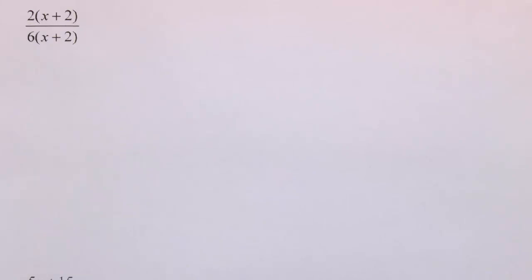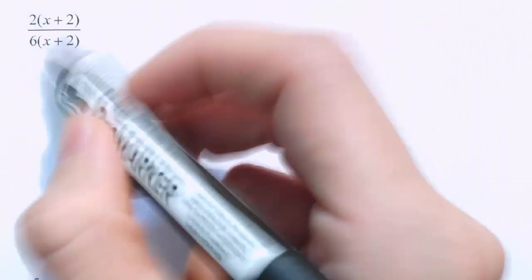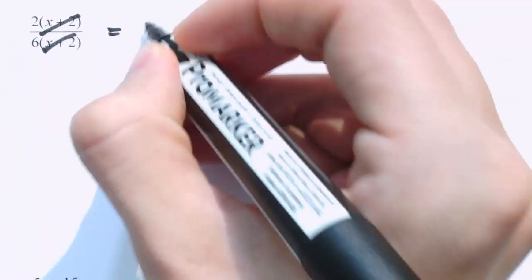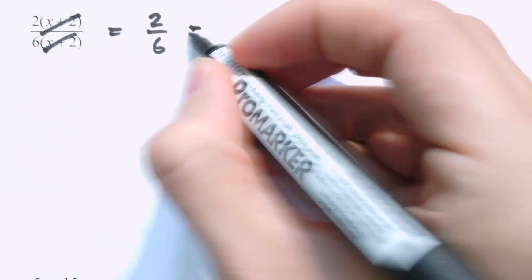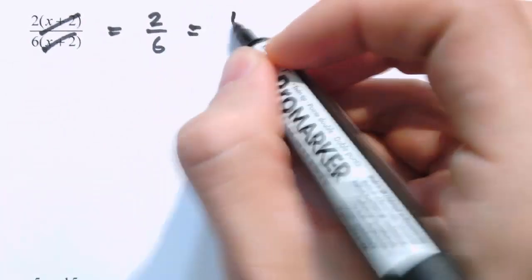So we've got the basic idea. Let's look at some harder cases. We've got 2 times (x plus 2) divided by 6 times (x plus 2). These are nicely factorised forms, top and bottom, so we've got a common factor of (x plus 2) that we can divide by, leaving just 2 over 6. We also notice there's a factor of 2, so that simplifies to 1 third.